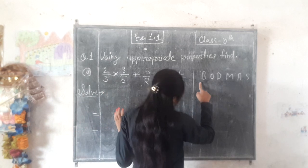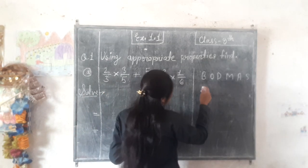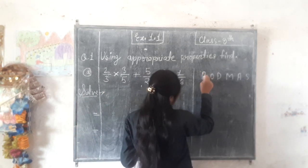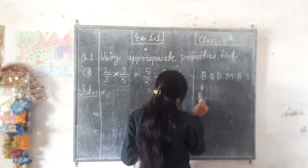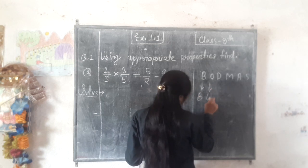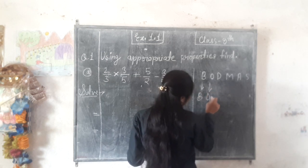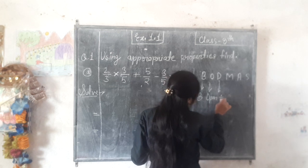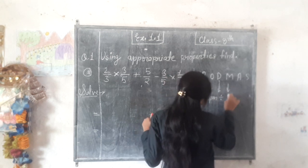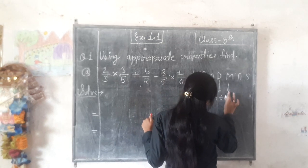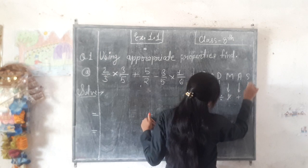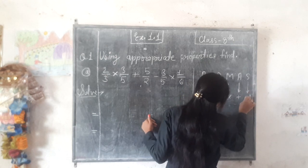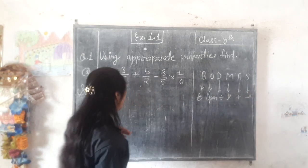Sabse pehle hum dekhte hain BODMAS rule. B se bracket, O se open, D se divide, M se multiply, A se addition, S se subtraction, that is minus.